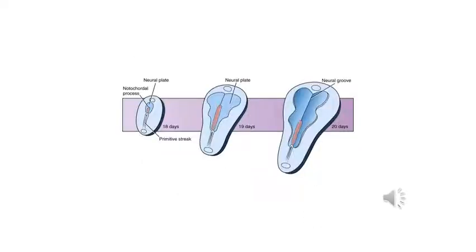Since you are physical therapy students, and since the nervous system is so vital to the work of physical therapy, you will definitely understand why the next event is important. In the third week, the primitive node induces the ectoderm to thicken into the neural plate. The neural plate is the beginning of the nervous system.